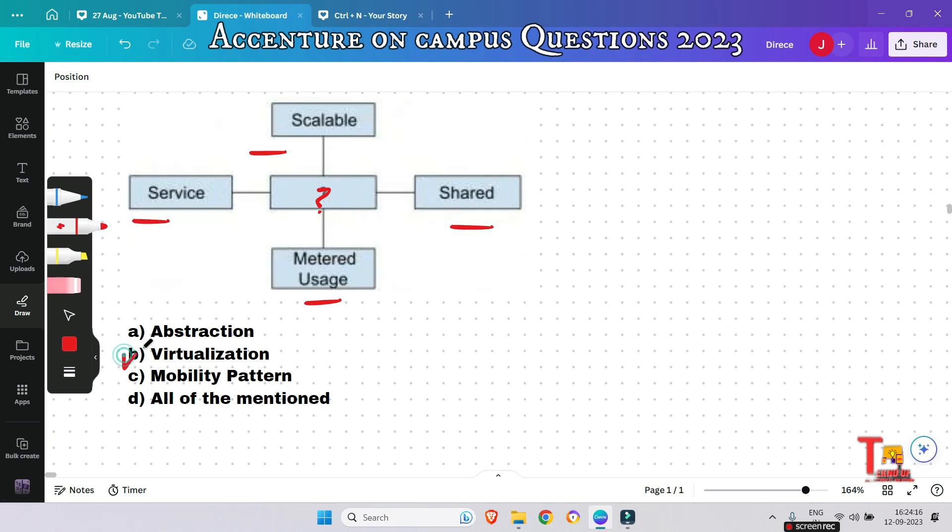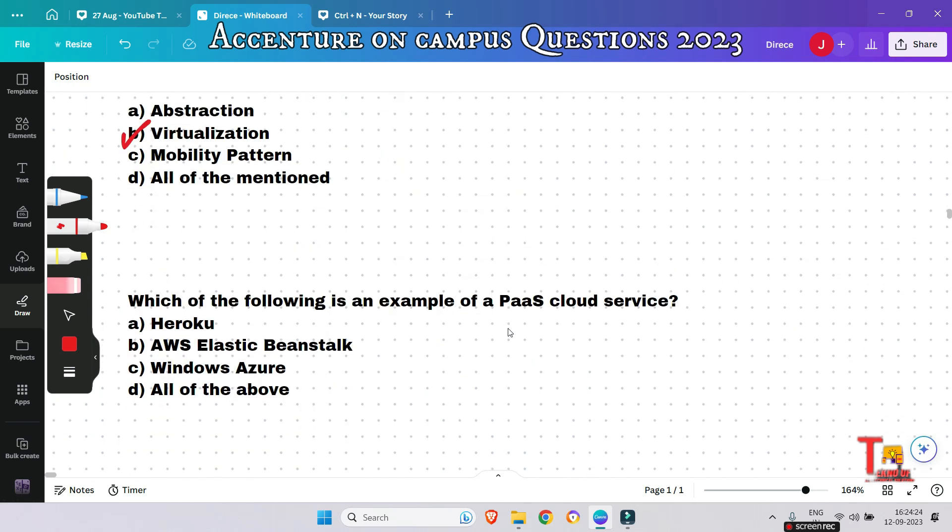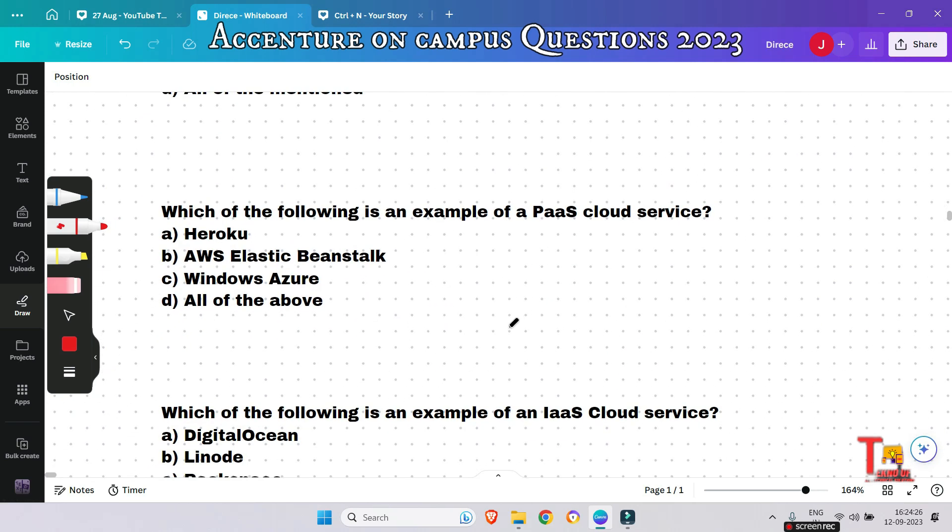The next question is: Which of the following is an example of PaaS cloud service? The answer will be all of the above - Heroku, AWS Elastic Beanstalk, Windows Azure.